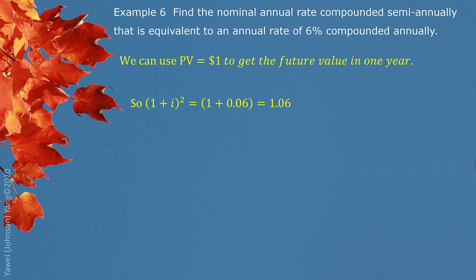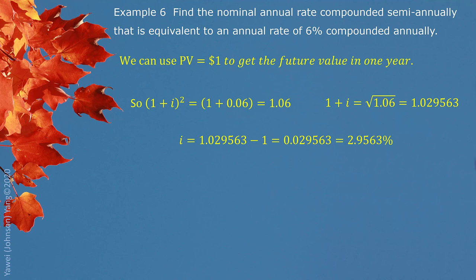This should equal the other situation: 6% compounded annually for one year. So that's our equation. By solving this equation and doing equivalent algebraic moves, we can get the periodic interest rate I = 2.9563%. This is not our nominal annual interest rate yet — we need to multiply by 2, giving us 5.9126%. That is the nominal annual interest rate we are looking for.